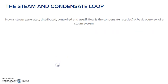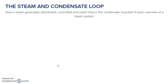What is this? It means how the steam is generated, distributed, controlled and used, and how the condensate is recycled. A basic overview of a steam system is nothing but the steam and condensate loop. We have already seen such a loop in power plant engineering and thermal engineering subjects. Let us revise this in short.